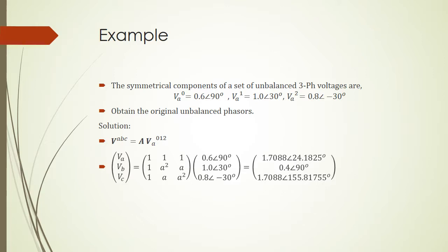Let's look at an example. The symmetrical components of unbalanced three-phase voltages are VA0, VA1, and VA2 as given — all in per unit. We need to obtain the original unbalanced phases. Simply, we multiply with matrix A to get VABC. We place the given sequence voltage vector in a column, multiply it with the rotation matrix A made from the rotation operator small a, and obtain the result.